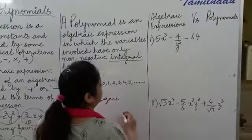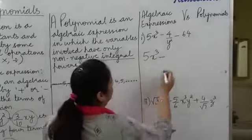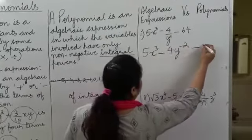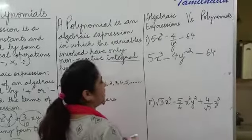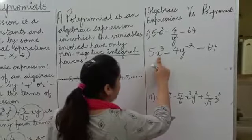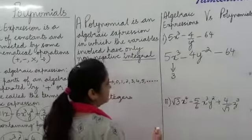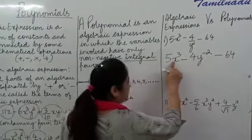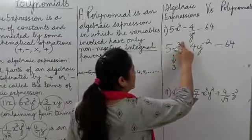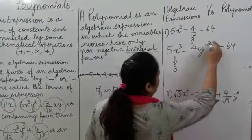Let's take a look at the first expression. The first step is to bring y² to the numerator, so this will look like 5x³ minus 4y⁻² minus 64. The next step is to identify the variables and their powers. The first term is 5x³: the variable is x and the power is 3. The second term has variable y and the power is −2. The constant term can be written with a variable raised to the power 0.